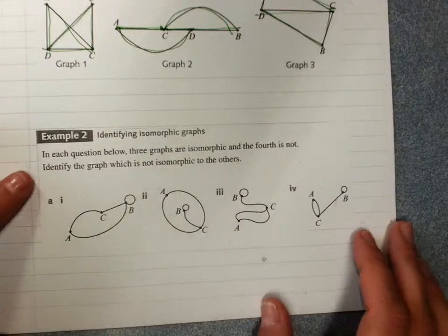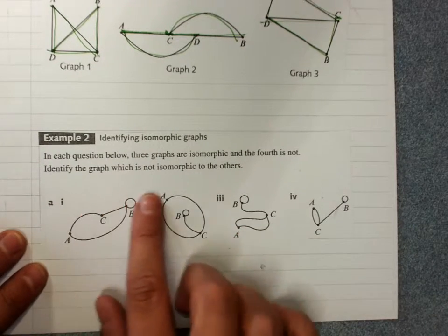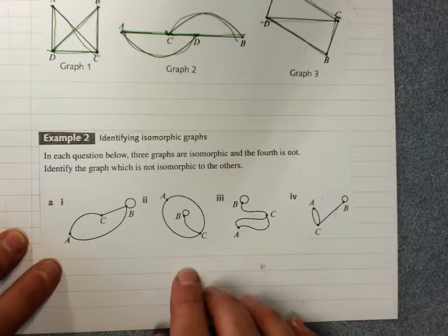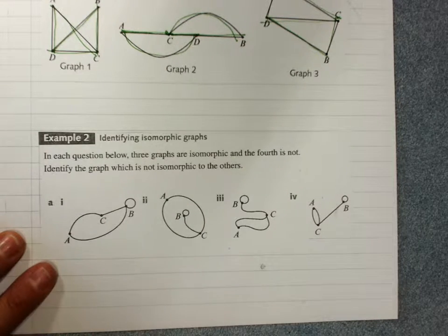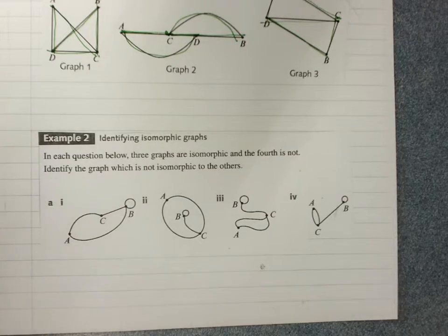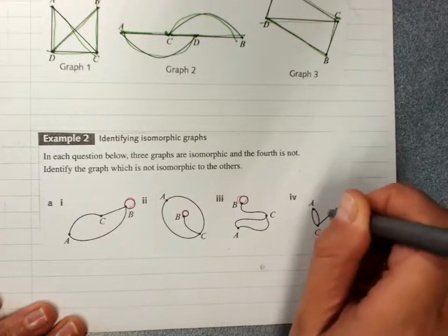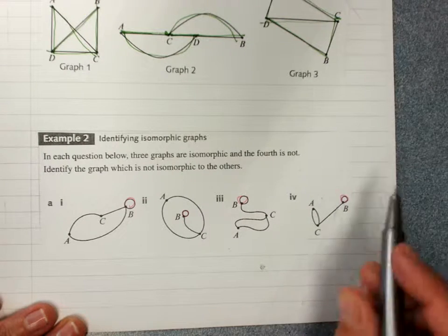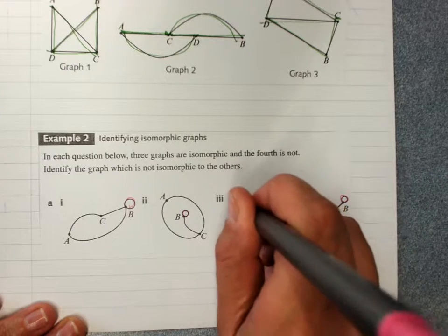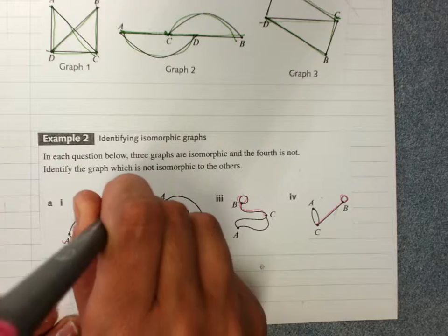So you might get a question where you're asked to identify isomorphic graphs. So three graphs are isomorphic and the fourth is not. Identify the graph which is not isomorphic to the others. Well, the loop is really easy to check off at B. Yes, we've got a loop at B. That doesn't help us. Is B connected then to C and only C? Yes, yes, yes, aha, no.